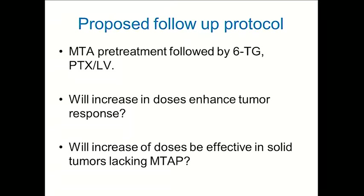The question is: can we do better by increasing the dose of 6-thioguanine using methylthioadenosine pretreatment? Our proposed follow-up protocol — if we can get methylthioadenosine manufactured — is to use methylthioadenosine pretreatment followed by 6-thioguanine and pralatrexate with leucovorin. The question is whether the increased doses will enhance tumor response, and whether they will be effective in solid tumors lacking MTAP.